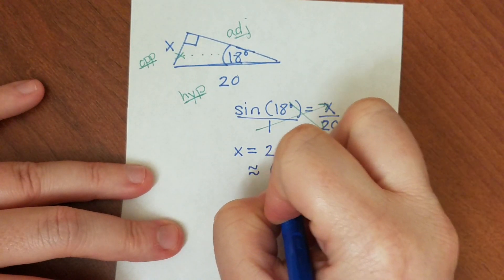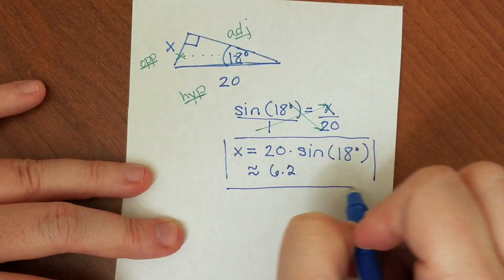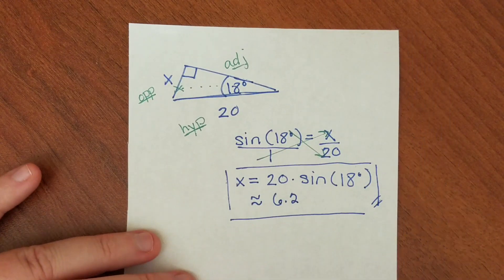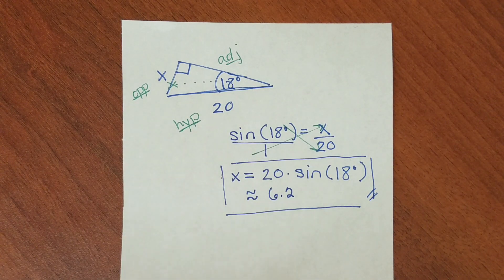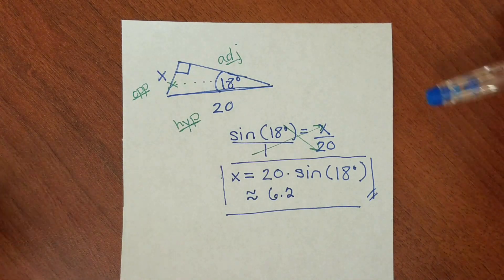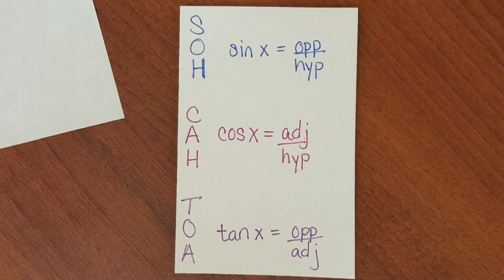With these problems, what you're doing is labeling your triangle — that's always going to be the first step. Label your opposite side, your hypotenuse, and your adjacent side. Then, looking at the angle that's given, which two sides do you have to work with? Do you have opposite and adjacent, or adjacent and hypotenuse? That dictates which one of our three trig functions you use to set up an equation and solve.